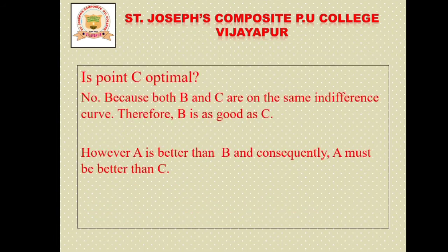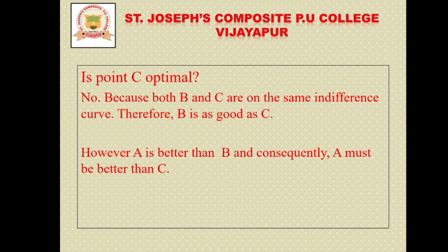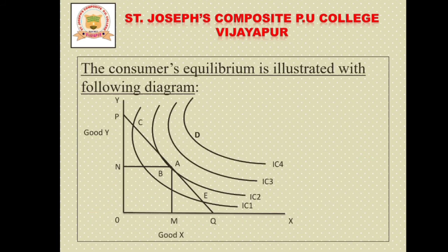Is point C optimal? No, this is also not an optimal point. Point C is on a lower indifference curve than point A. Moreover, both B and C are on the same indifference curve, so B is as good as C. However, A is better than B, and consequently A must be better than C. Therefore, C is also not an optimal choice.